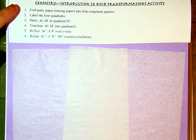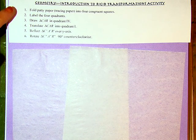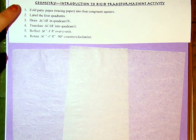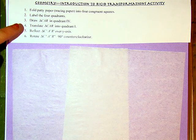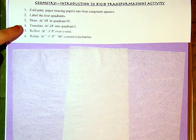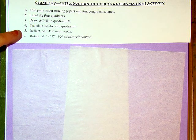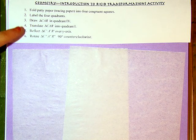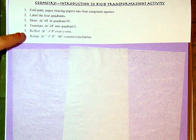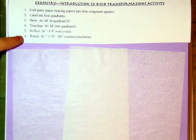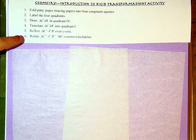Here's a breakdown of my instructions. We're going to start by folding the patty paper into four congruent squares, label the four quadrants, draw a triangle in quadrant four, translate that triangle into quadrant one, then reflect the image over the y-axis, and then rotate that triangle into a new position in quadrant three via a 90-degree counterclockwise rotation.